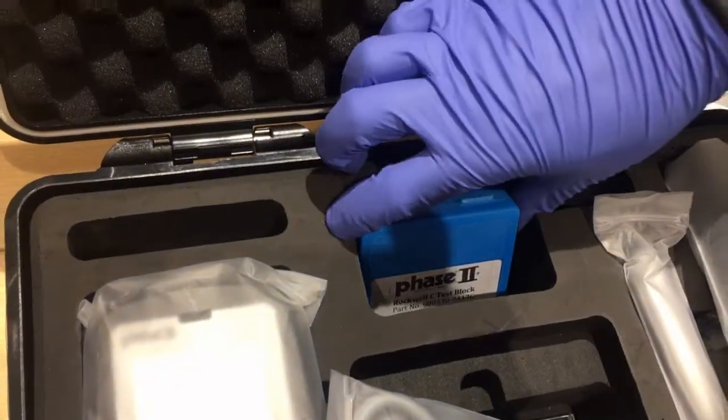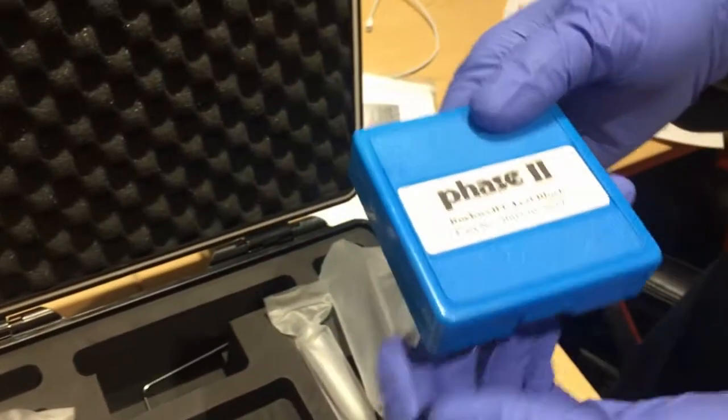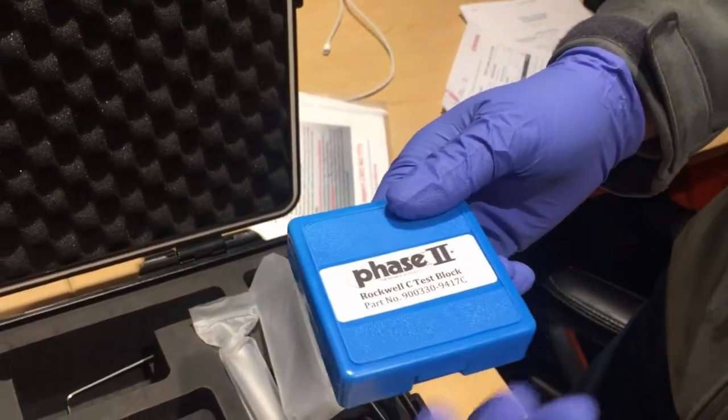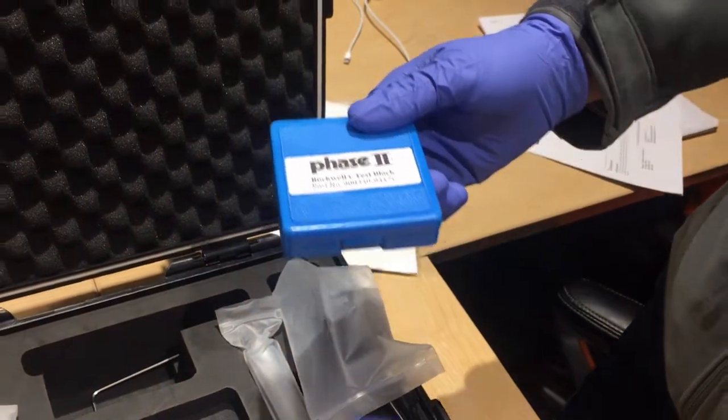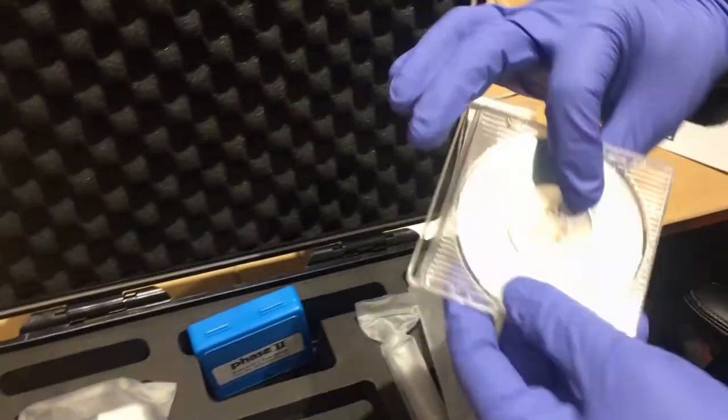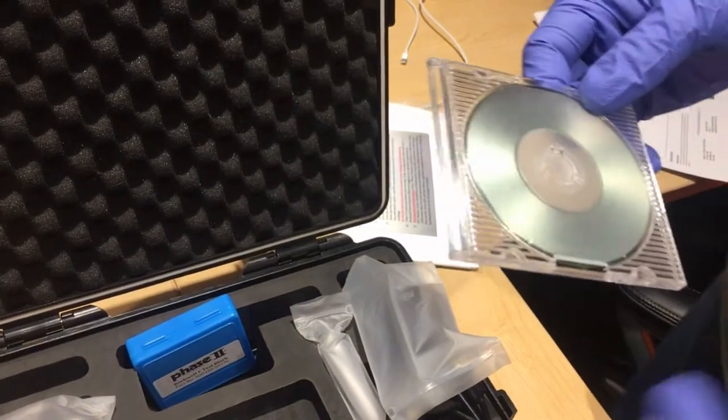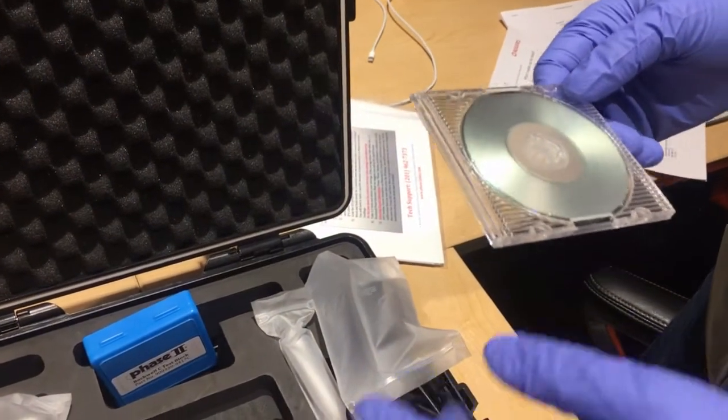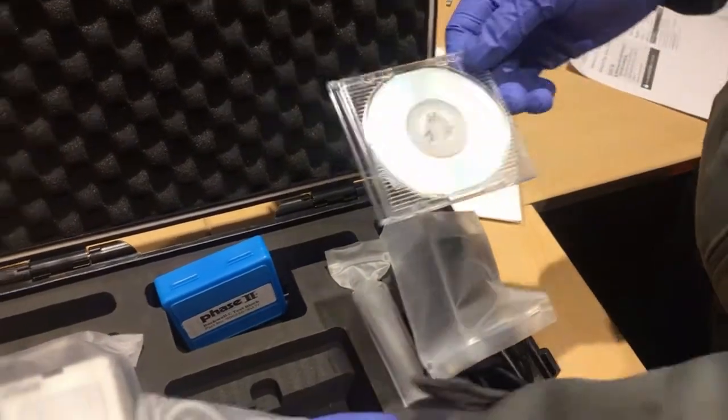Here is the test block. It has a standard hardness there, so we can calibrate our new product. And here is the disk. This disk allows you to utilize the software on your PC in order to transport your data from the machine to your PC.